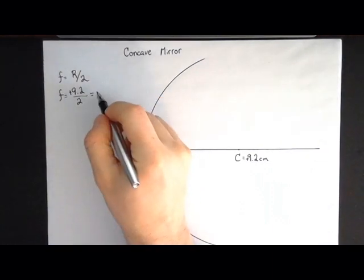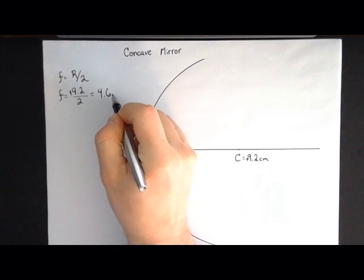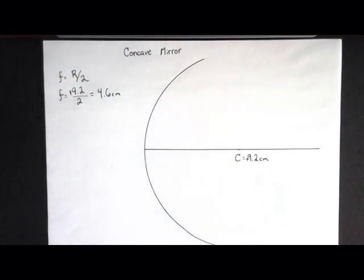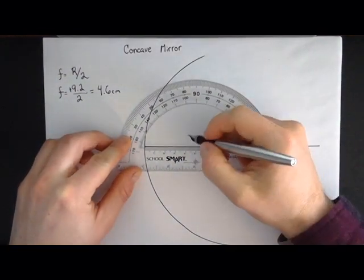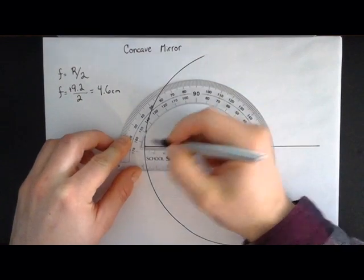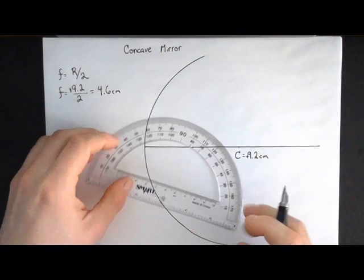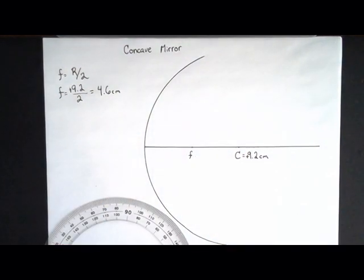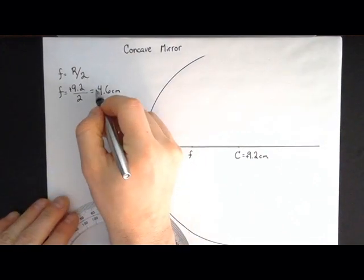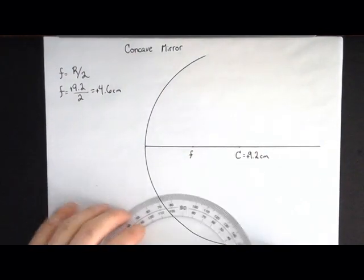In this case the focal length is going to be 9.2 over 2, everything's positive here, which is 4.6 centimeters. I can take my little protractor here and measure 4.6 centimeters away from the center of the mirror, mark a little point, and that will be my focal point at positive 4.6 centimeters.